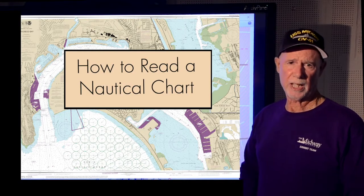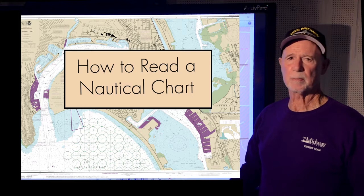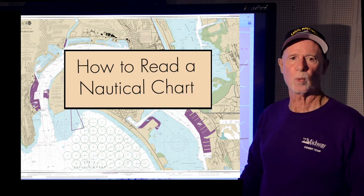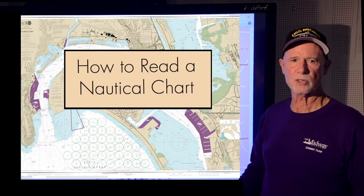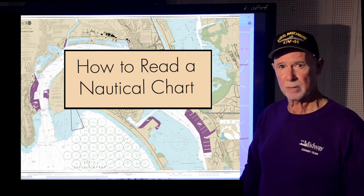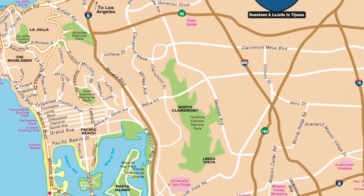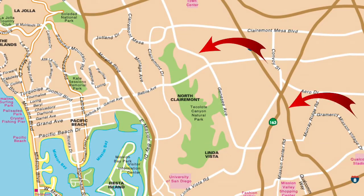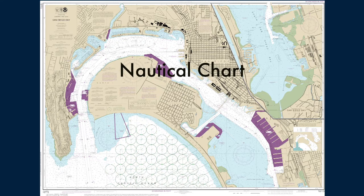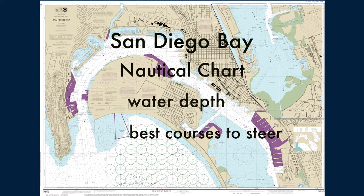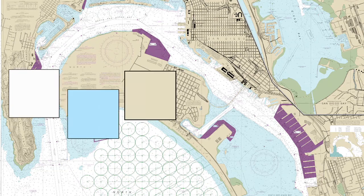Welcome to one of our Midway University classrooms aboard the museum, the perfect place to learn about nautical charts. Nautical charts are used by mariners to find the best water routes between their current location and their destination. A nautical chart is similar in many ways to a road map. Here's a map of the city of San Diego, which gives us important information about land, such as streets, highways, and parks. A nautical chart gives important information to mariners about water depth and best courses to steer when on the water. This is a nautical chart of the San Diego Bay. Just like on road maps, nautical charts use colors to depict information.